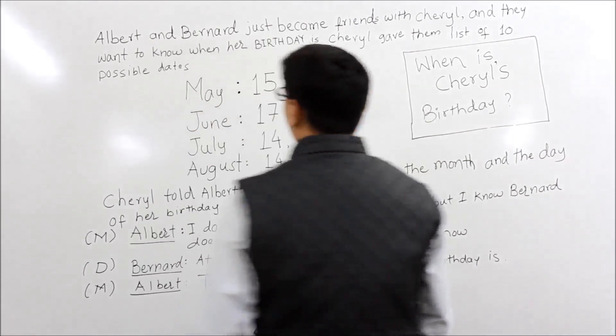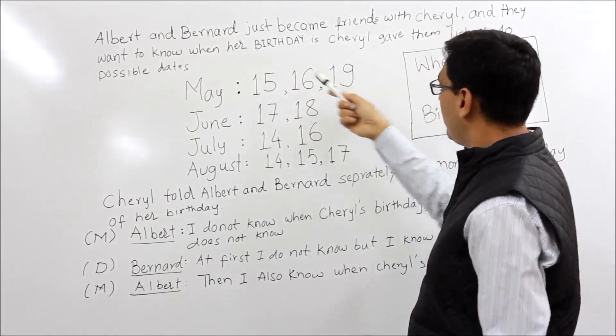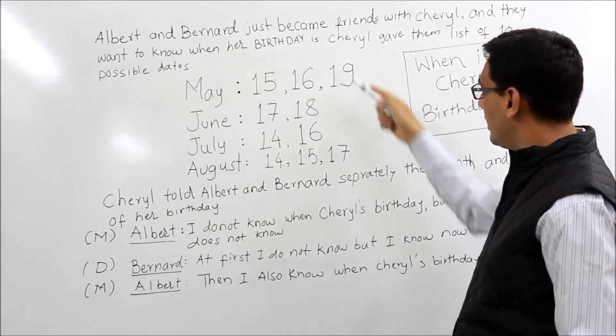Albert and Bernard just became friends with Cheryl and they wanted to know when her birthday is. Cheryl gave them these 10 possible dates. I am sure most of you have come across this question — let's take it fast. These are the 10 dates.